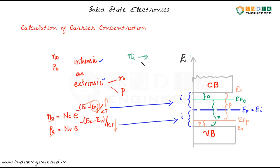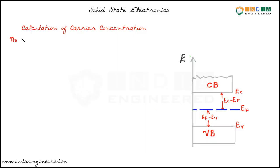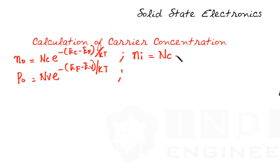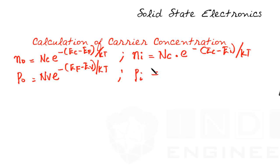Now we will see the relation between intrinsic carrier concentration and the carrier concentrations when the material is doped — the relation between Ni, N0, and P0. We have found the equations for N0 and P0. In the case of the Fermi level in intrinsic material, we have used EI. So Pi, which equals Ni in the case of intrinsic materials, equals NV times e to the power of minus (EI minus EV) by KT.